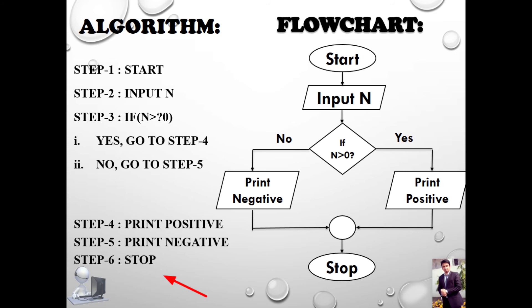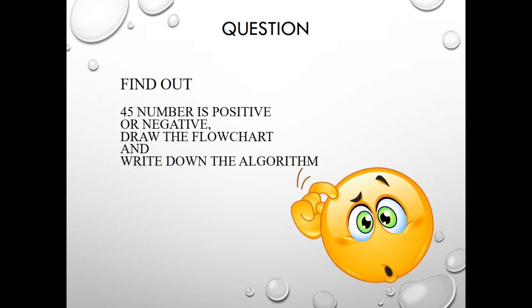I hope you understood. Here is our question: Find out if the number 45 is positive or negative. Draw the flowchart and write down the algorithm. This is your homework.